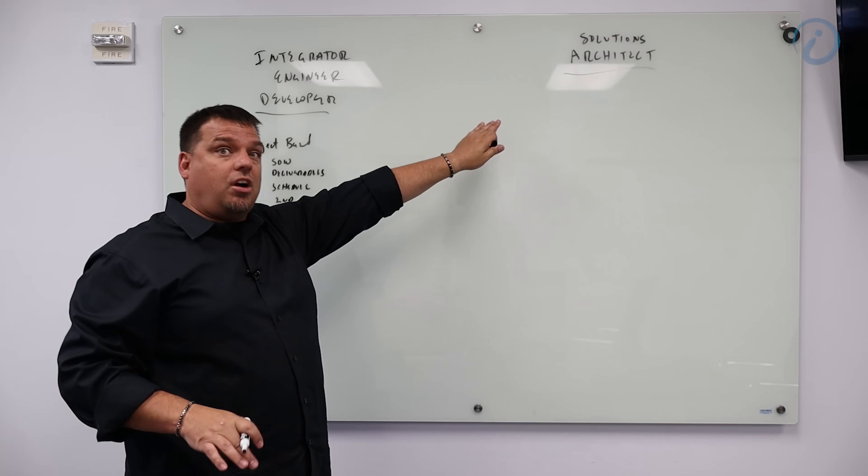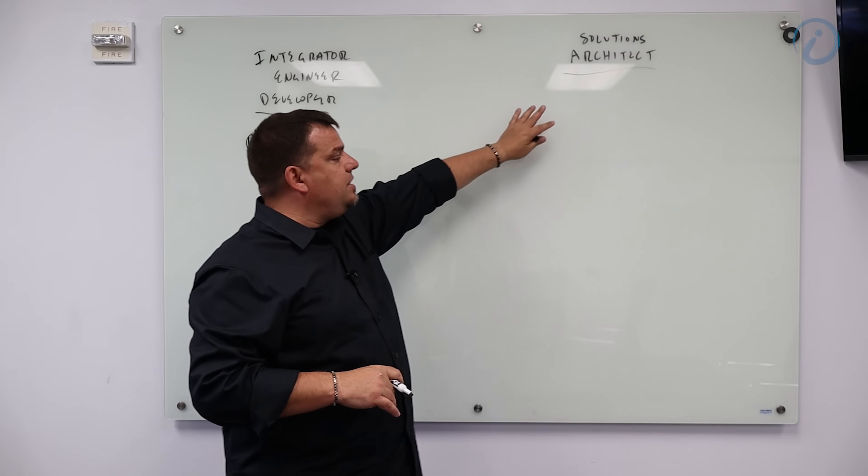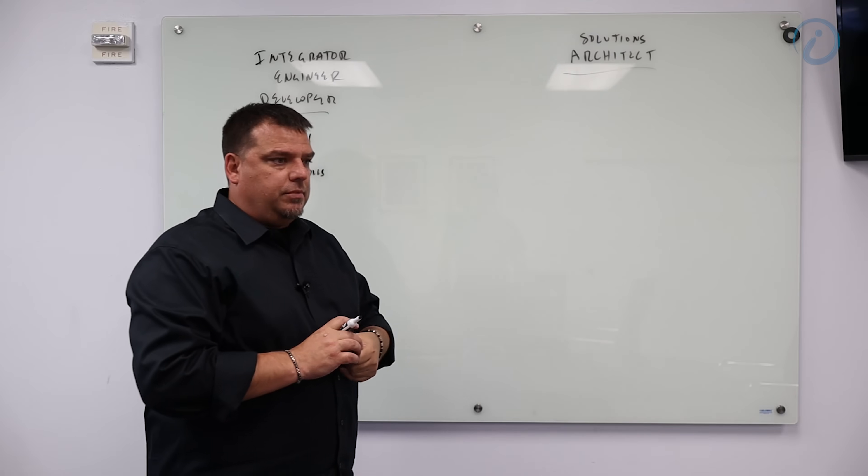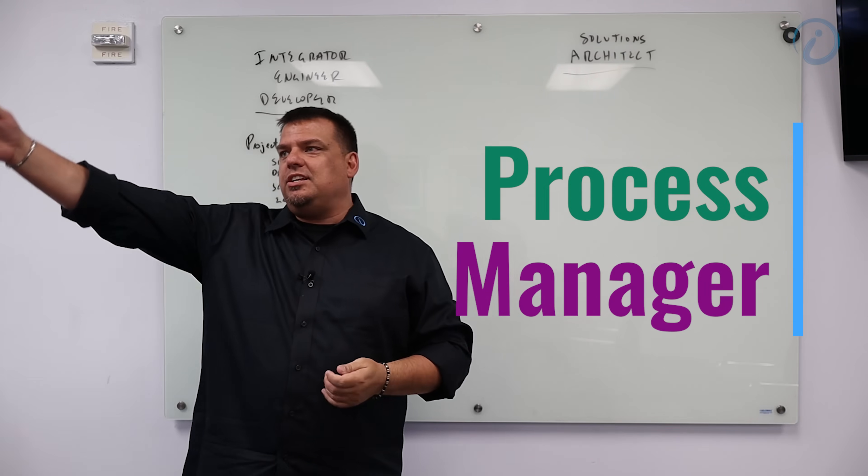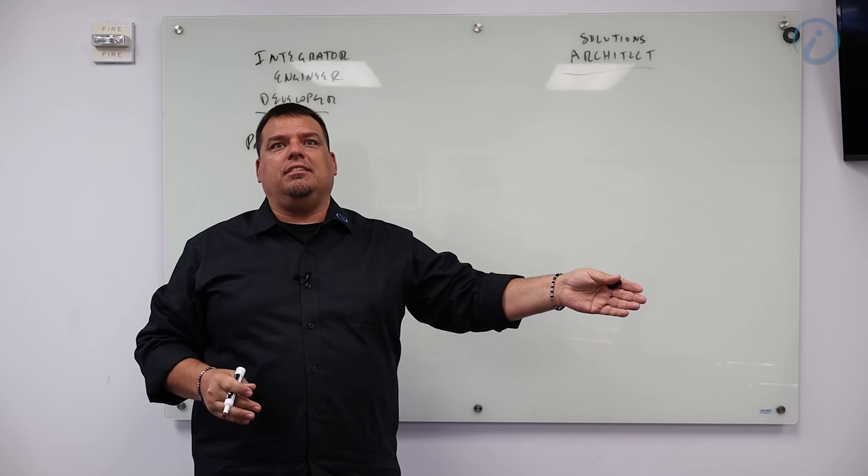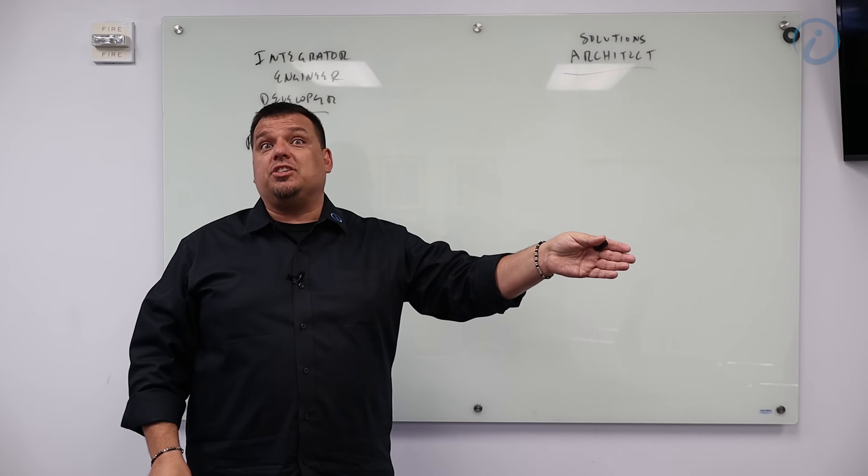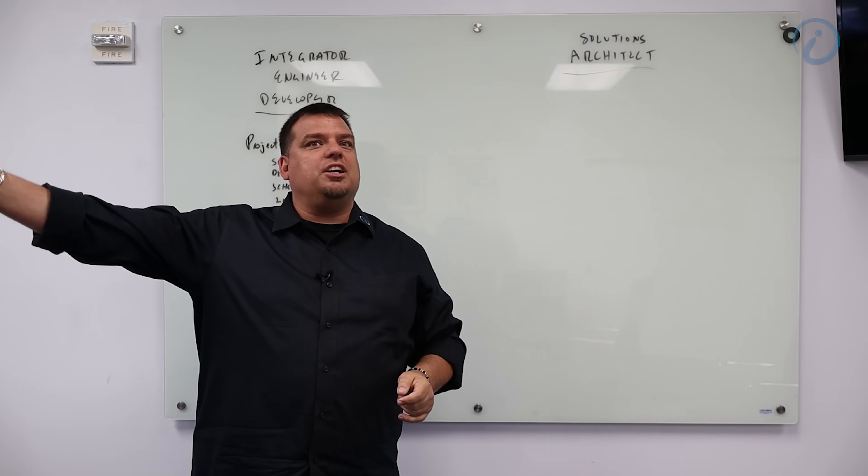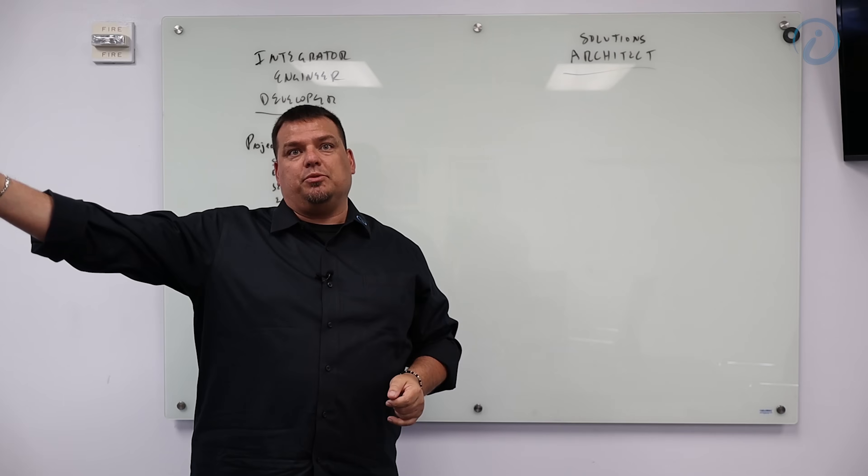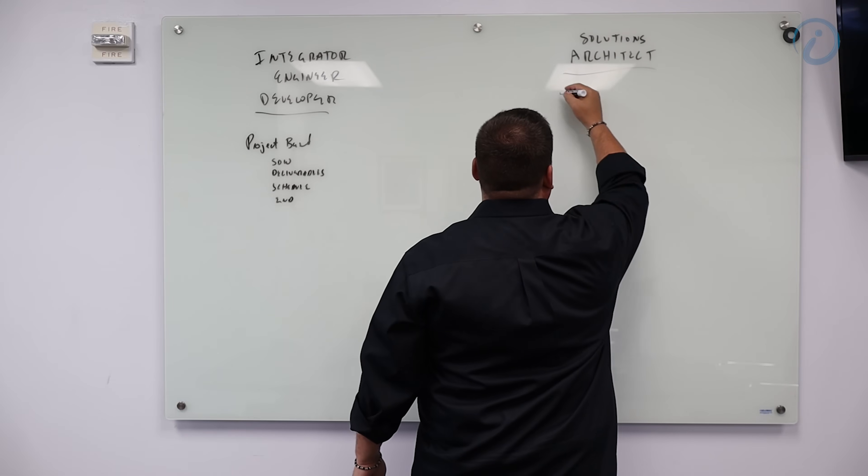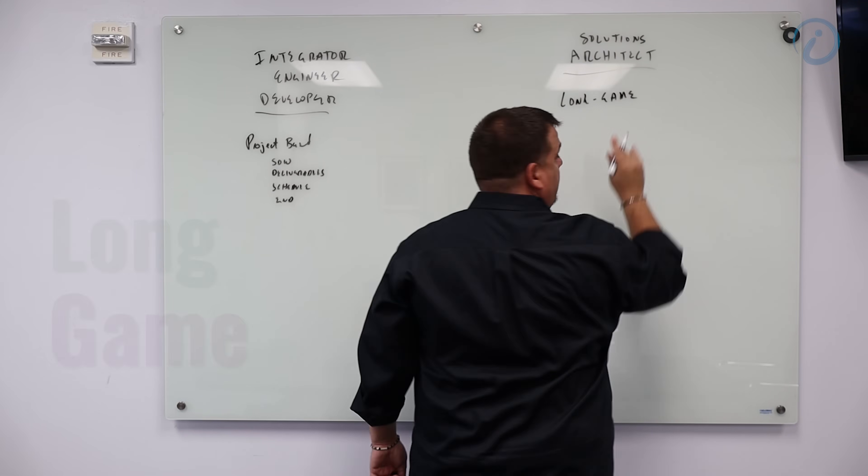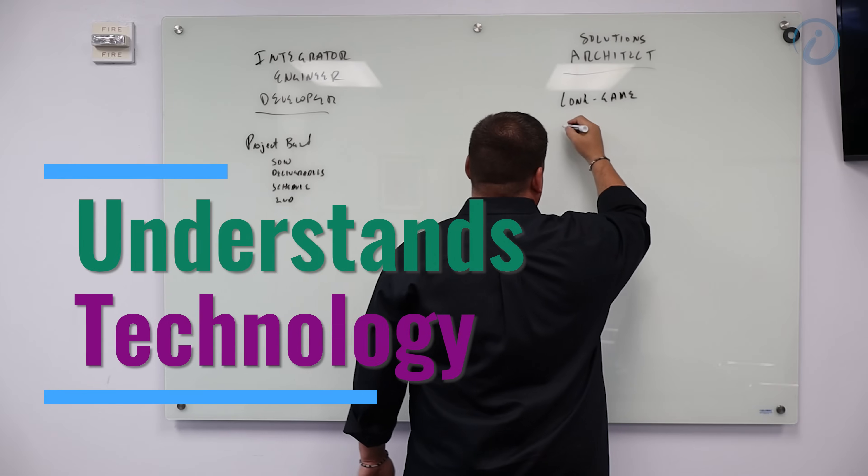A solutions architect, think of a solutions architect as a process manager. The fundamental difference between a process engineer and a controls engineer is that a controls engineer eventually walks away. The process engineer is always coming back and looking for ways to improve. That's a solutions architect. So the solutions architect is playing the long game.